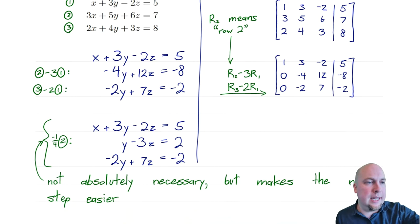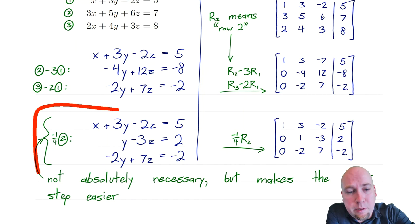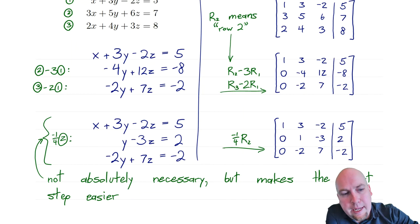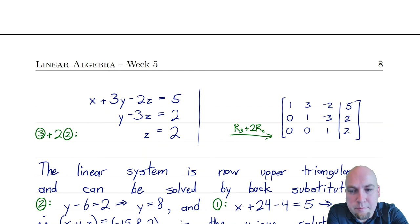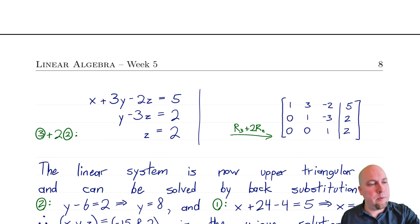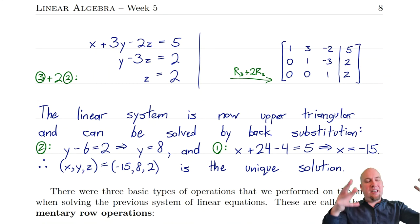Carrying out R2 minus 3R1: we get 0 in the first position, minus 4, 12, and minus 8 in the new second row. We do a similar operation for the third row. Then multiplying row two by minus a quarter — written as minus one-quarter times R2 — gives us a cleaner second row. And then R3 plus 2R2 gives the final triangular matrix, with zeros in the lower triangular portion below the diagonal. That's the form we want for back substitution.